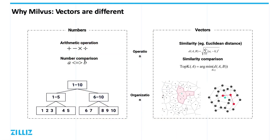Maybe you've been convinced that embedding vectors are very important in today's data applications. Why don't we just support them through relational databases and other big data technologies? A vector also just looks like a number — what's the difference? There are two major sets of differences. First, the common operations with vectors and numbers are different. The most common operations between numbers are addition, subtraction, multiplication, and division. With vectors, on the other hand, the most common operation is to calculate the distance between two vectors. As you can see on the slides, this Euclidean distance operation is a lot more computationally intensive than a simple arithmetic operation.